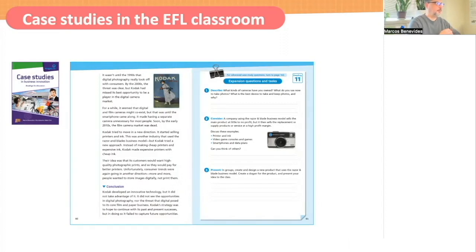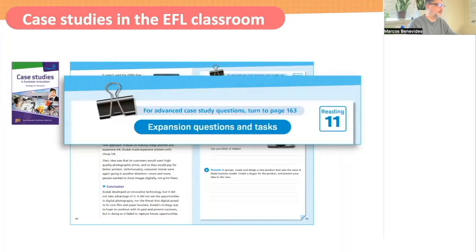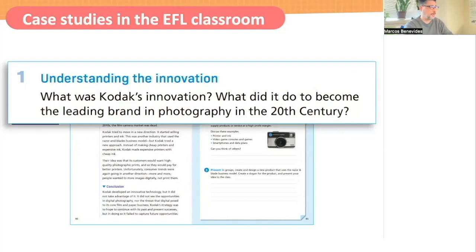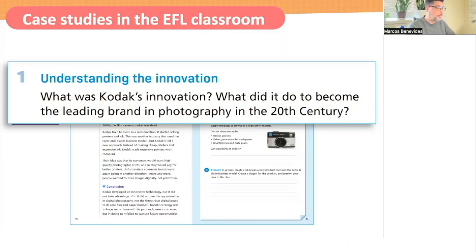After the reading is done, there are two possible paths that the teacher can take. If you look at the top of the page, it says for advanced case study questions, turn to page 163. Below that, it says expansion questions and tasks are on the page itself. The reason we did this is because we didn't want the textbook to be very particularly leveled to a certain level of student. We wanted to be useful and flexible for a variety of students in classroom situations. So we put slightly more advanced open-ended questions at the back of the book. And these questions are the ones that actually fit in most closely with the case study method. The first question asks the students to look at the business world in a broader way — what was Kodak's innovation? What did it do to become the leading brand in photography in the 20th century? These are fairly big, broad questions that are suitable for a case study approach, but perhaps maybe a little bit difficult in the typical second language classroom.